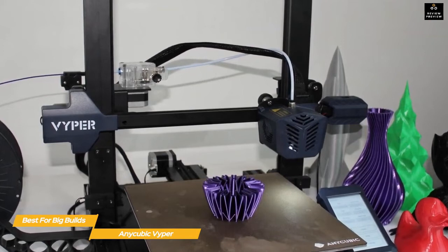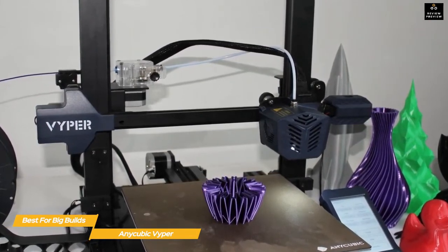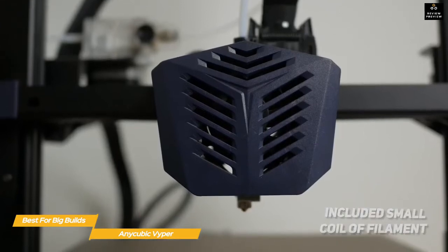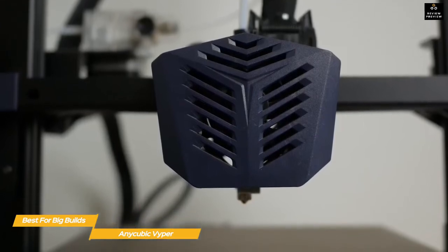They can also be sliced, which is useful if you want to print a large model in smaller parts. The Viper comes with a small coil of filament, enough for just two or three objects, so you'll want to add at least one spool to your order when you buy the printer.